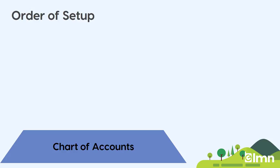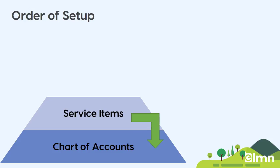Let's take a quick look at the order of setup. Typically you'd start setting up your accounting with the chart of accounts — that's your foundation for everything, dictating where things end up in your P&L or company-wide reporting. In QuickBooks, there's also this thing called service items. Service items link to chart of accounts, so you can use service items when you do transactions and the service item will dictate what chart of account the money ends up in. So a service item, for example, could be linked to a material expense account.